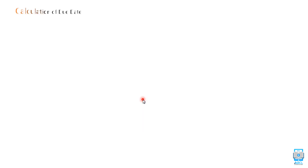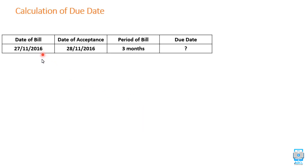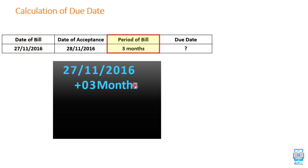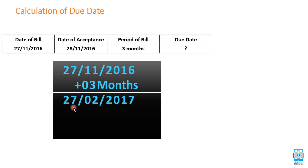Let's see another example. Again, date of bill, date of acceptance, and period are given. Since nothing is specified, we start from date of bill which is 27th November 2016, and we add the period of 3 months. We can go maximum up to December, so adding 1 month gives December, and adding 2 more months takes us into the next year — 27th February 2017.